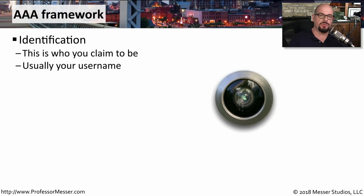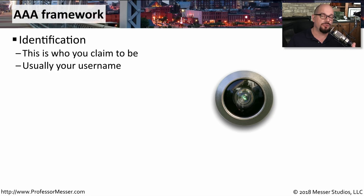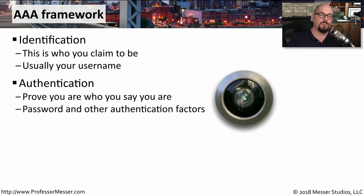Whenever we're using resources on our network, we're constantly needing to identify ourselves — when we sit down at our computer, connect to a wireless network, or try to access a resource across the network. To gain access to these resources, we need some way to validate that we really are who we say we are. In those cases, we would use a AAA framework to provide authentication, authorization, and accounting to keep track of exactly what you've accessed and when on the network.